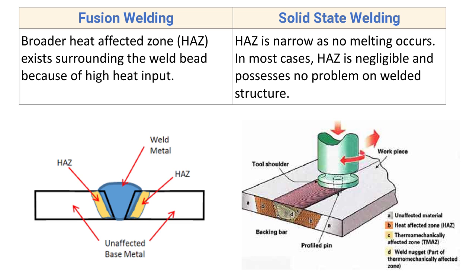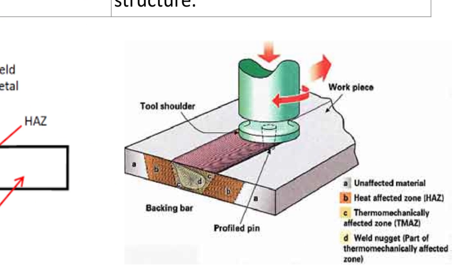In solid state welding, the heat affected zone is narrow because no melting occurs. In most cases, the HAZ is negligible and poses no problem to the welded structure. Since no heat is applied by an external source and the pressure-generated heat remains well below the melting point of the base component, no melting takes place, and the HAZ is very narrow — even negligible in some processes.